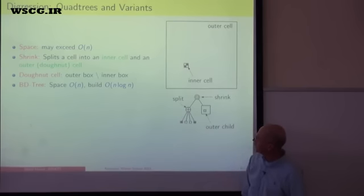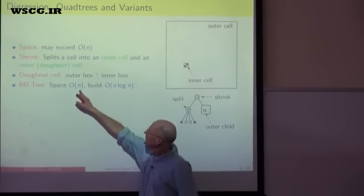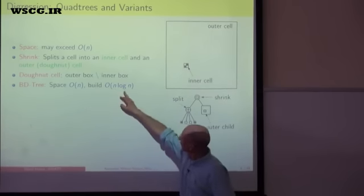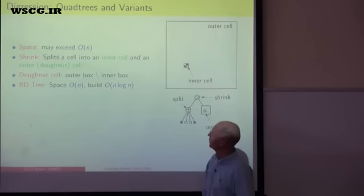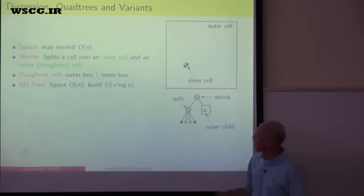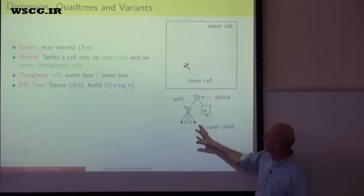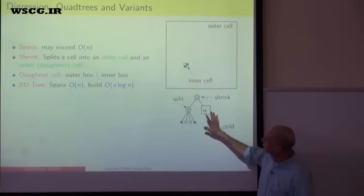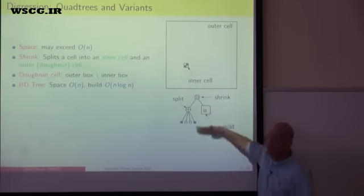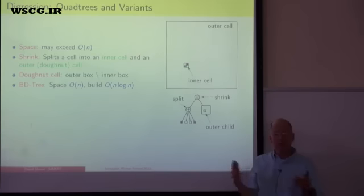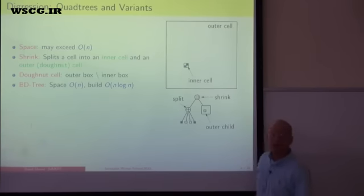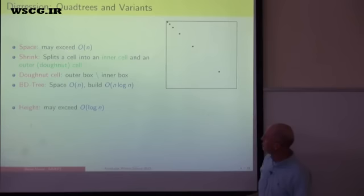The donut cell is the set-theoretic difference of two cubes — the outer cube and the inner cube. This goes under the name BD tree, which stands for box decomposition. Because of this shrinking property, with every two levels of splits you always get a non-trivial decomposition — amongst the children, two of them are going to be non-empty. So the space is going to be linear in N and the build time is N log N. But the height of this tree is not generally logarithmic in N — for example, a geometric series of points gives a degenerate structure.